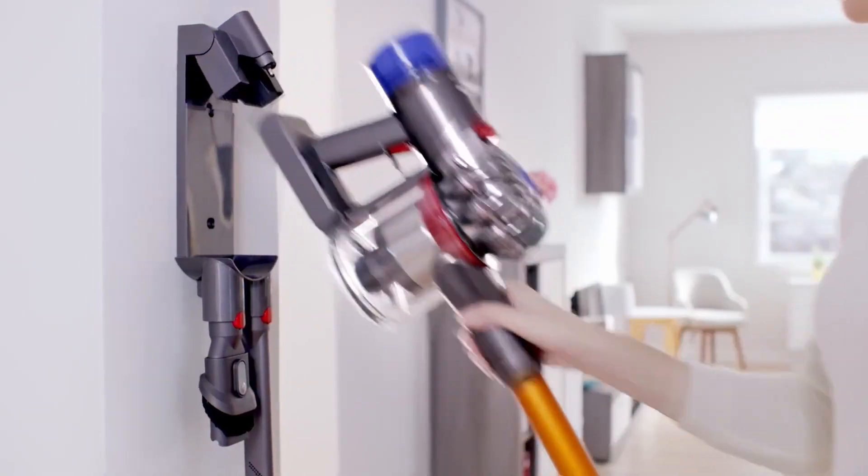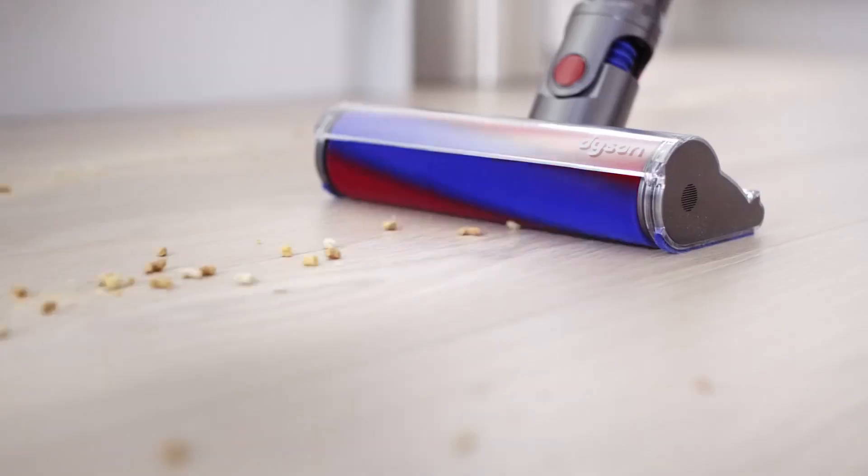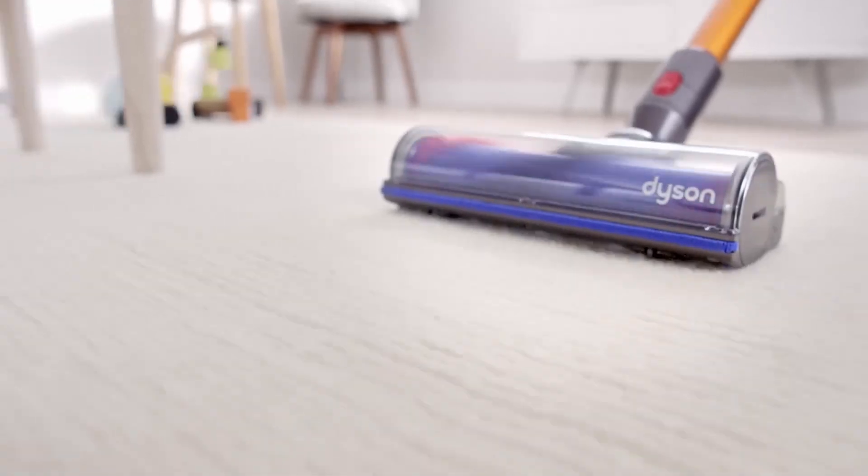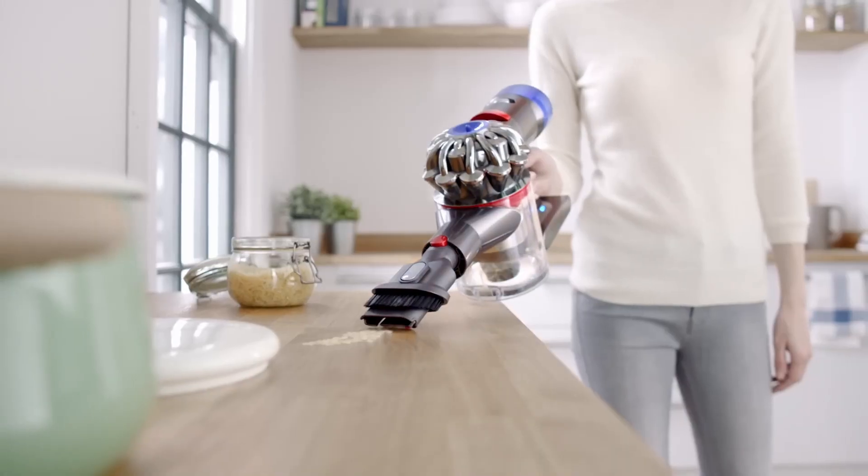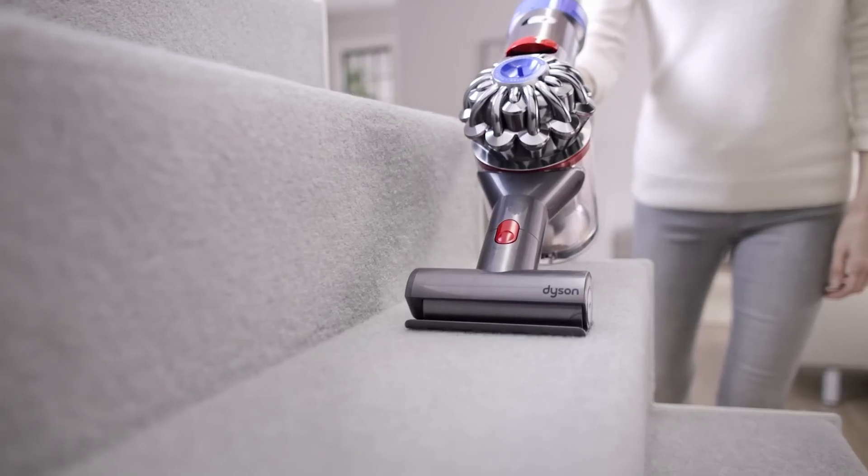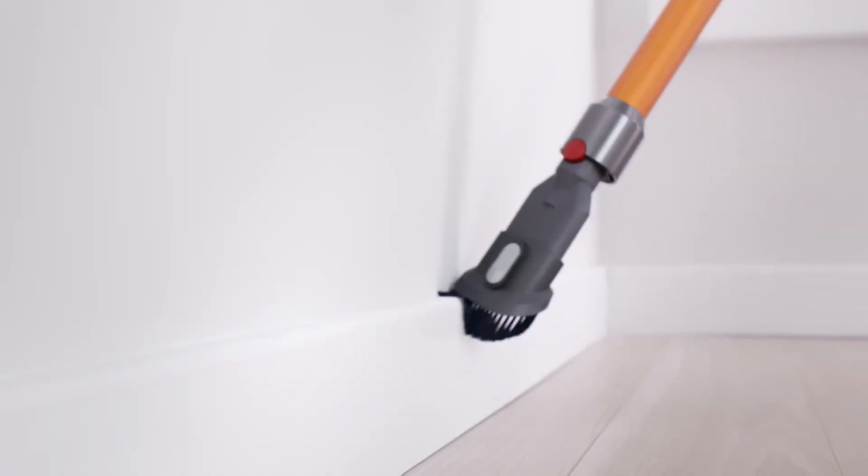The V8 is powered by a Dyson digital motor, which spins at an impressive 110,000 RPM, generating strong suction capable of capturing even the finest dust and dirt particles from a variety of surfaces. Its two-tier radial cyclone technology features 15 cyclones arranged in parallel, working to increase airflow and capture microscopic dust particles, offering superior cleaning efficiency. One of the standout features of the Dyson V8 is its versatility.